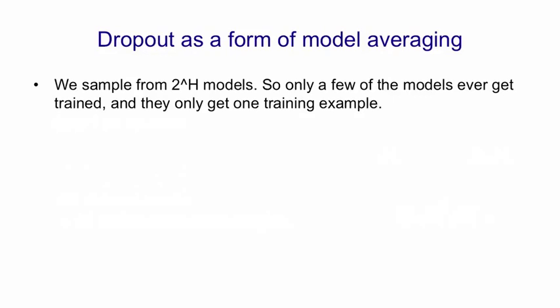So we can think of dropout as a form of model averaging. We sample from these 2 to the H models. Most of the models, in fact, will never be sampled, and a model that is sampled only gets one training example. That's a very extreme form of bagging. The training sets are very different for the different models, but they're also very small.